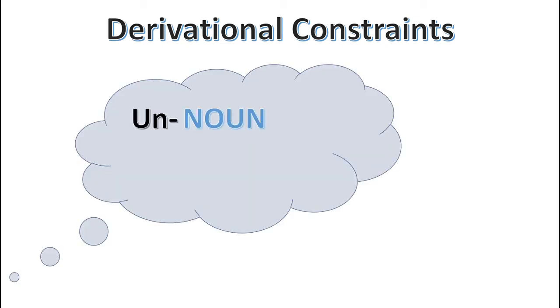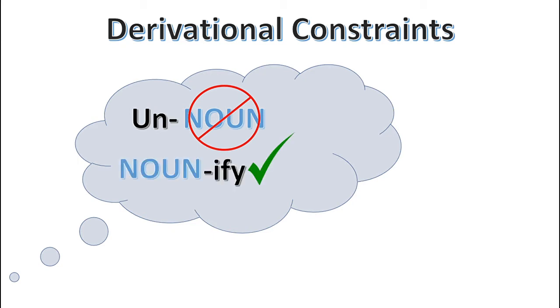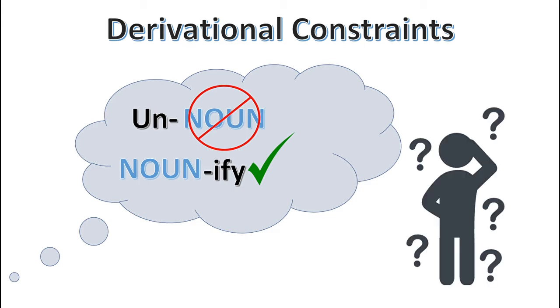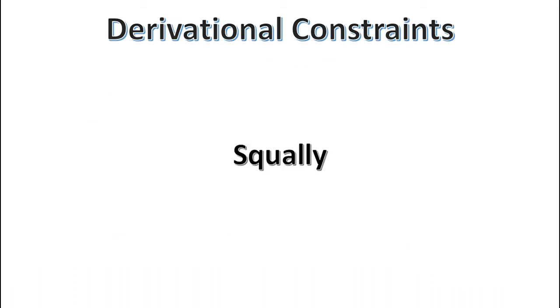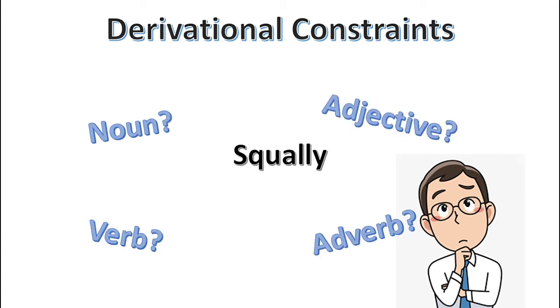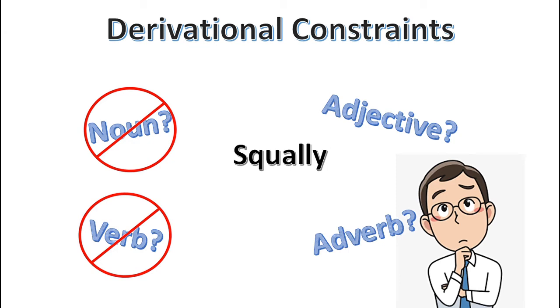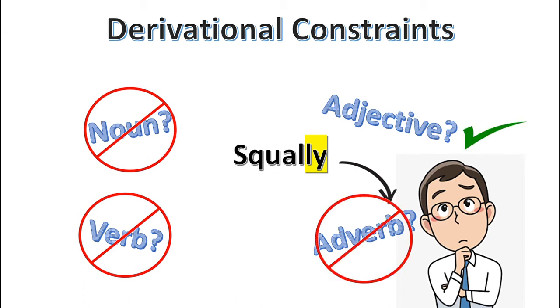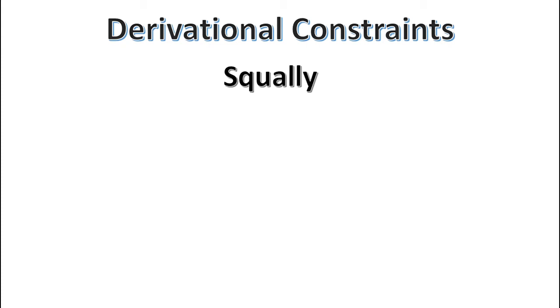In derivational morphology, there are many constraints regarding the category of words that affixes can attach to. The prefix un- cannot attach to a noun, and the suffix -ify can only attach to nouns. Our implicit understanding of these rules helps us recognize new forms — though this can be tricky for language learners. For example: do you know the word 'squally'? What syntactic category is it — a noun, verb, adjective, or adverb? You probably know it isn't a noun or a verb, but you might be stuck between adjective and adverb. The safest guess would be an adverb, given the -ly suffix. However, in this case it isn't — it's an adjective.